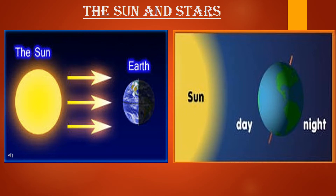We have also talked about the causes of day and night. The Sun appears to rise in the east in the morning and climb higher and higher in the sky towards midday. In the afternoon the Sun then seems to move lower and lower in the sky before setting in the west.